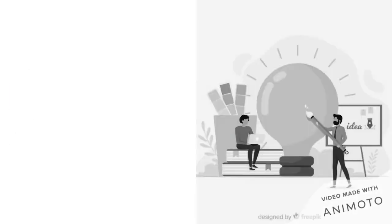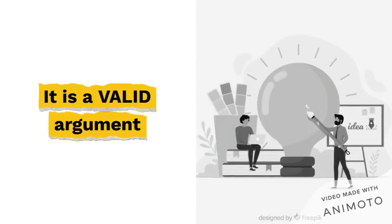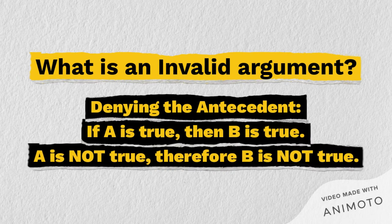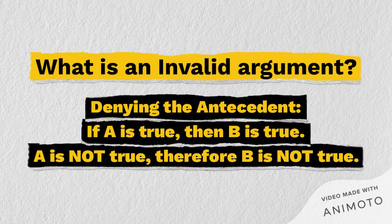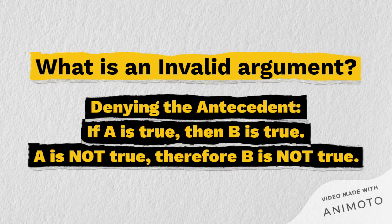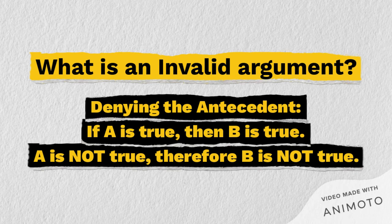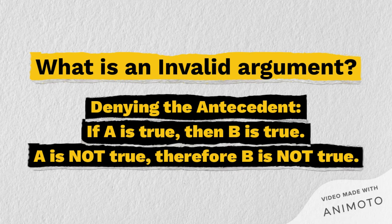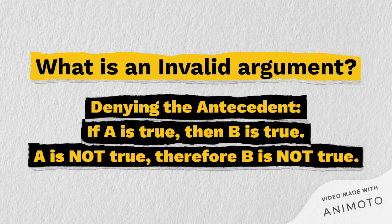Moreover, the most important thing about denying the consequent is that this is a valid argument. To understand what an invalid argument is, let me explain. An invalid argument refers to denying the antecedent, which is: if A is true, then B is true; A is not true, therefore B is not true. In this case, we are denying the antecedent first — and this is an invalid argument.